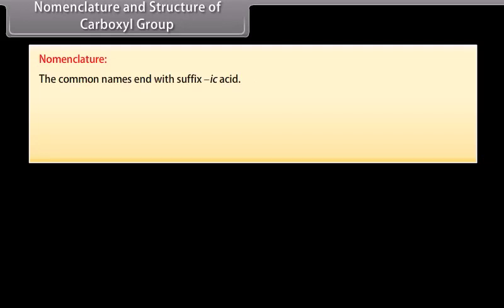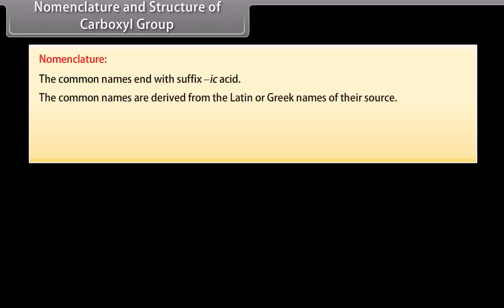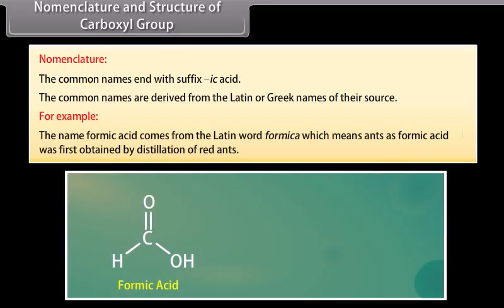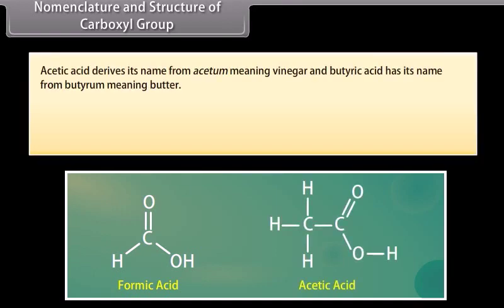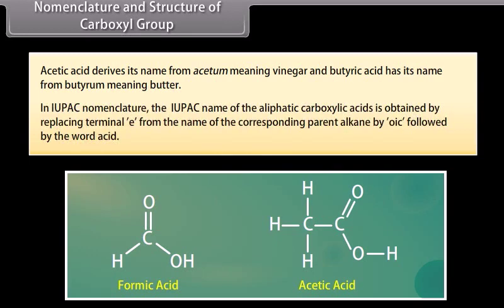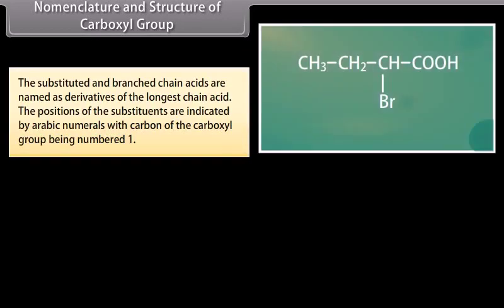Nomenclature and structure of carboxyl group. Nomenclature: the common names end with the suffix '-ic acid'. The common names are derived from the Latin or Greek names of their source. For example, the name formic acid comes from the Latin word 'formica' meaning ants, as formic acid was first obtained by distillation of red ants. Acetic acid derives its name from 'acetum' meaning vinegar, and butyric acid has its name from 'butyrum' meaning butter. In IUPAC nomenclature, the IUPAC name of aliphatic carboxylic acids is obtained by replacing the terminal 'e' from the name of the corresponding parent alkane by 'oic', followed by the word acid. The substituted and branched-chain acids are named as derivatives of the longest chain acid.